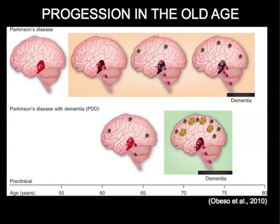There are two types of Parkinson's disease. One is the early-onset type where you can see all those stages I described, and the hallmark pathological finding is called the Lewy body — inclusions within the neuronal cells.